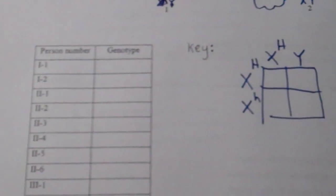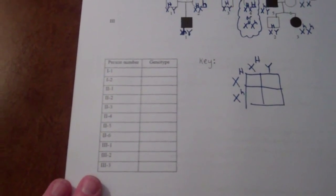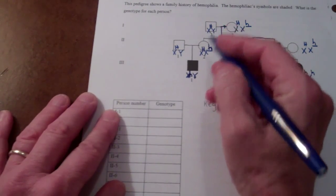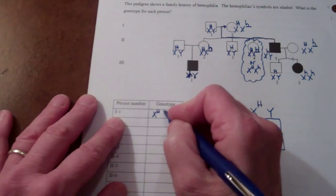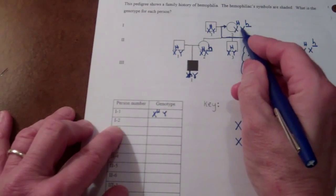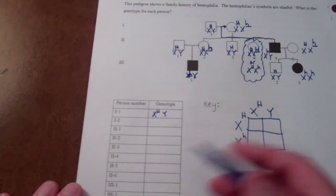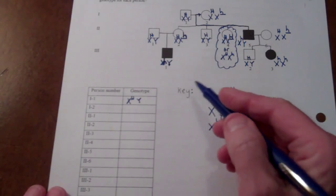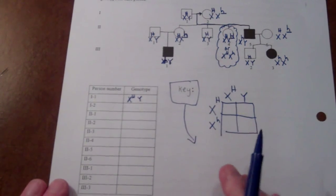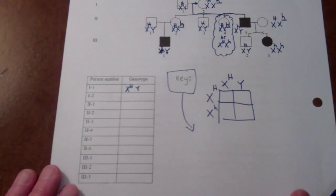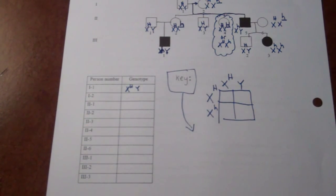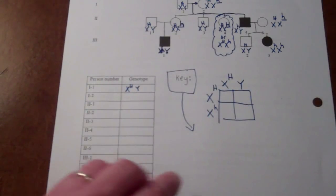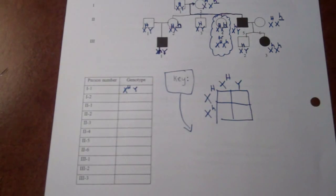Your job now is to fill in all of the genotypes — person 1-1 would be X^H Y, and so on. Figure out and write down the genotype of all of these people by looking at your pedigree. Also fill in your key for hemophilia — look at your notes on the backside and find it. That's basically the key you want to put right here. Good luck with the rest of it!